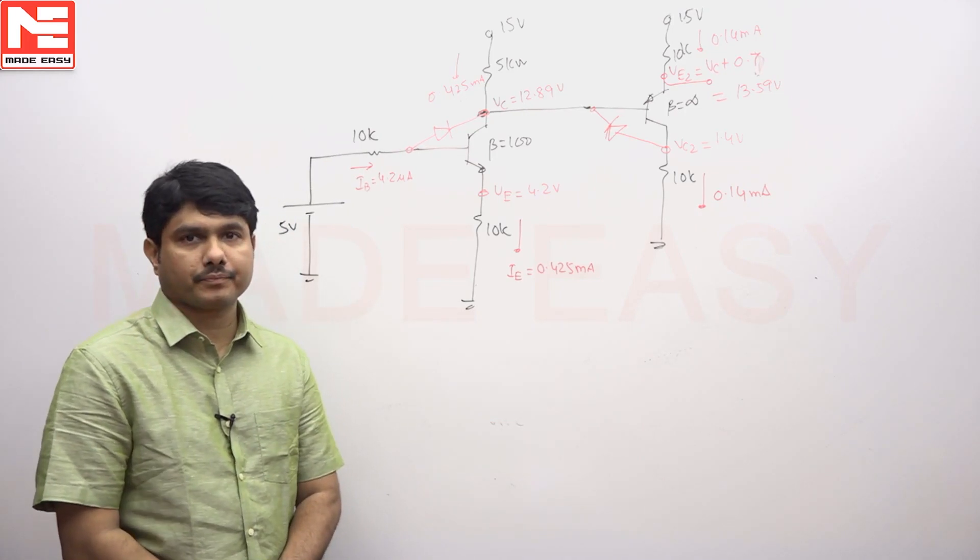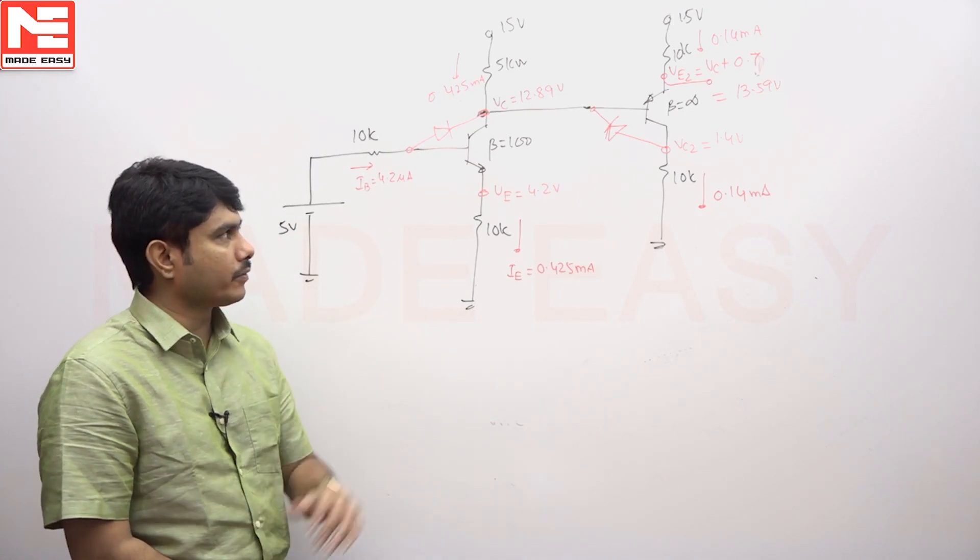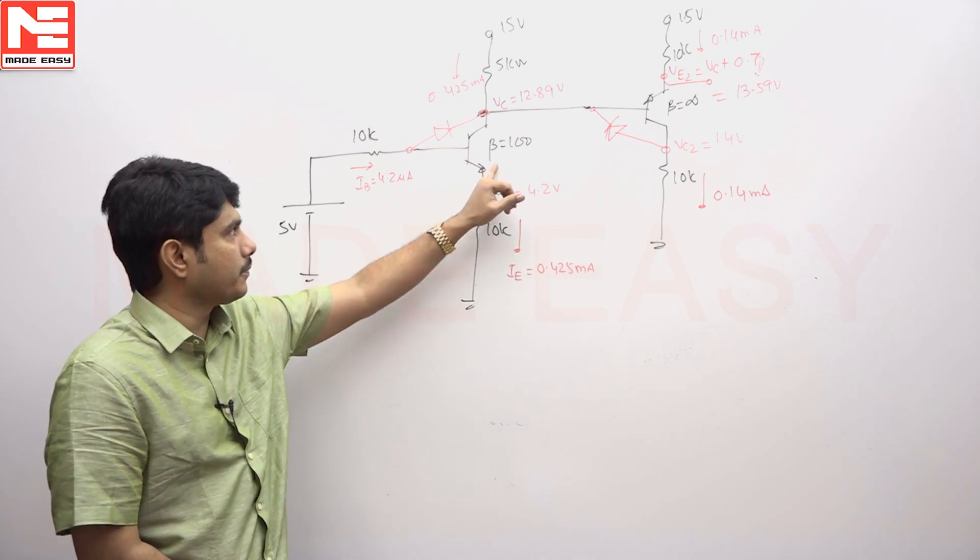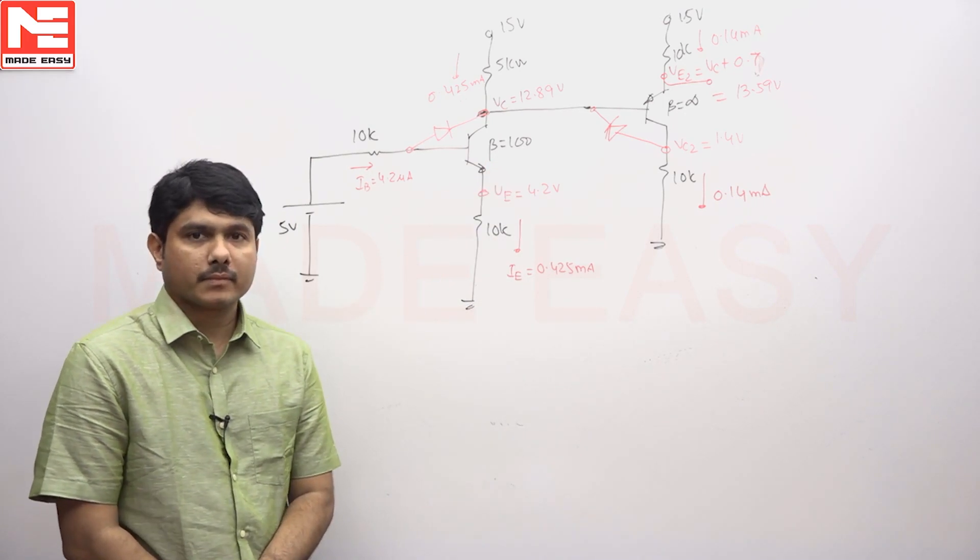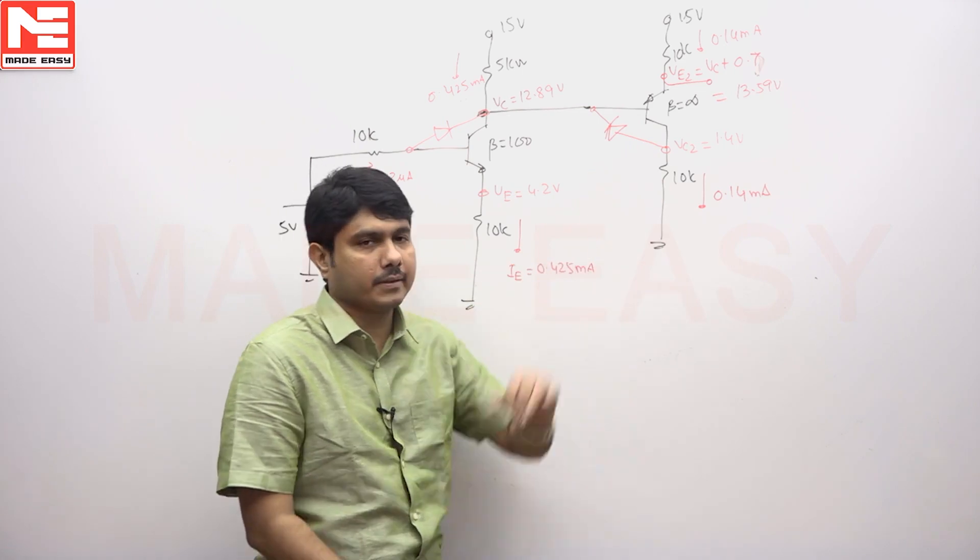This question is a BJT problem, an interconnection of two transistors. One transistor has a beta value of 100, and the second transistor has a beta value of infinity.